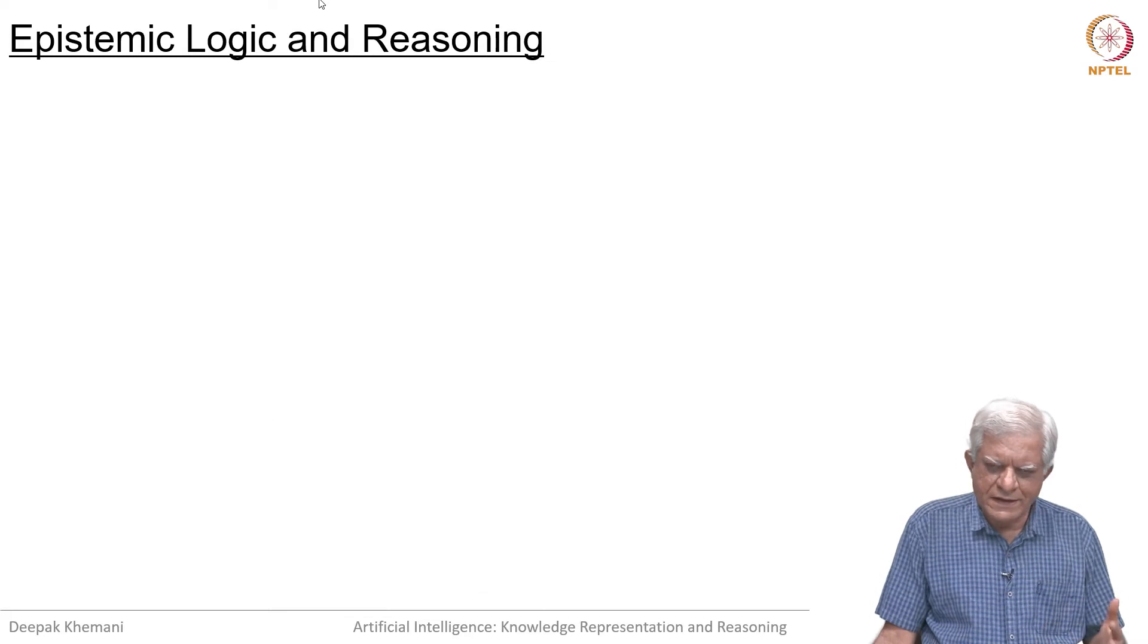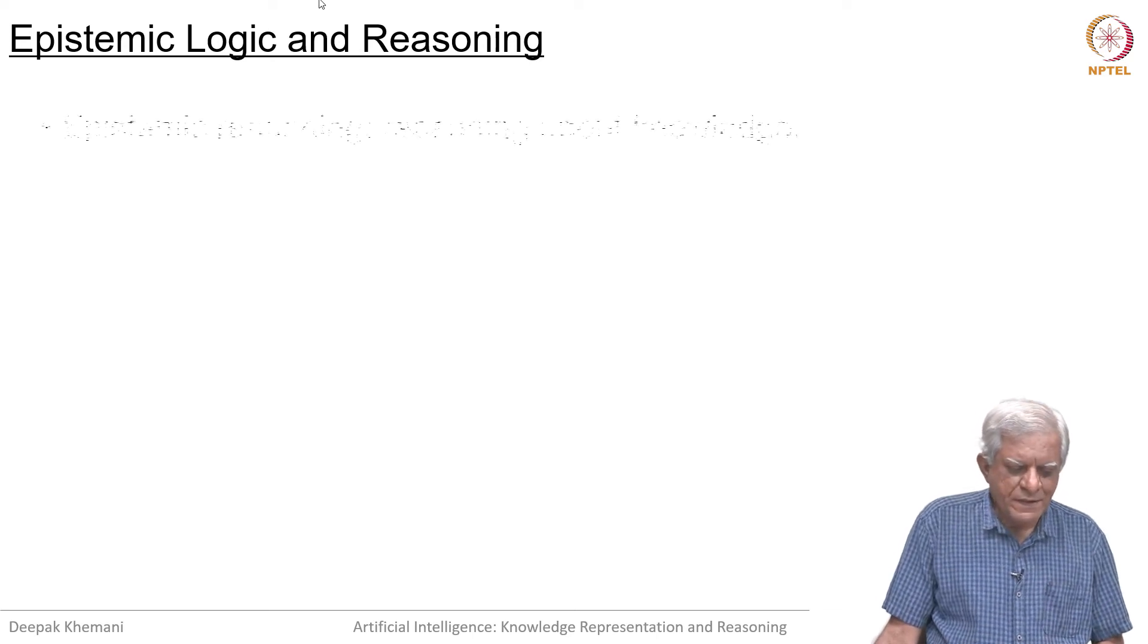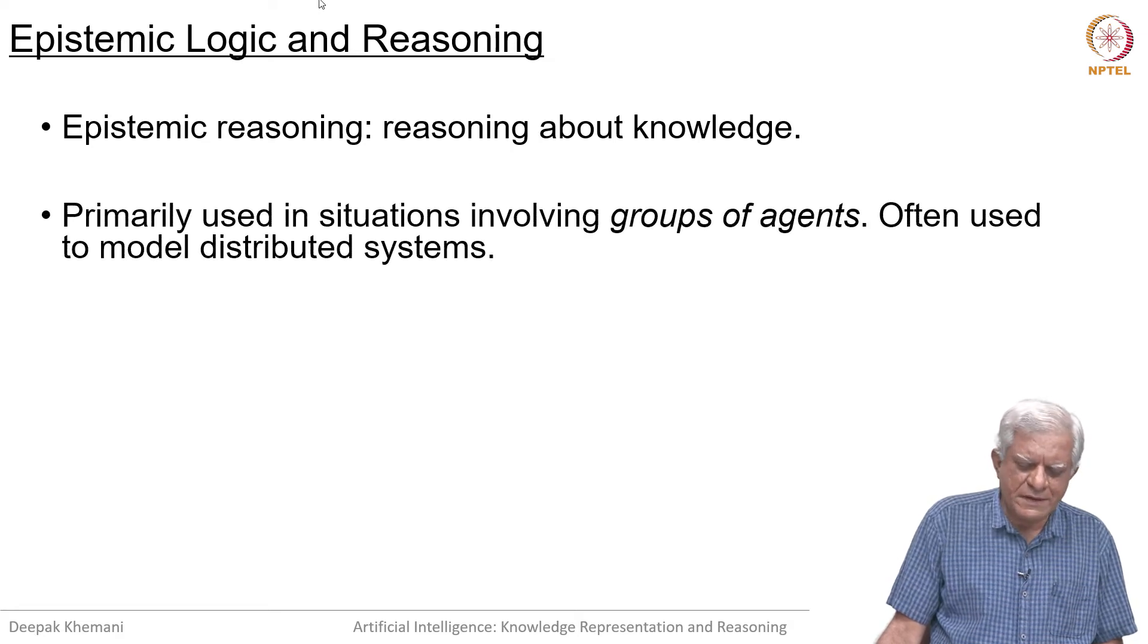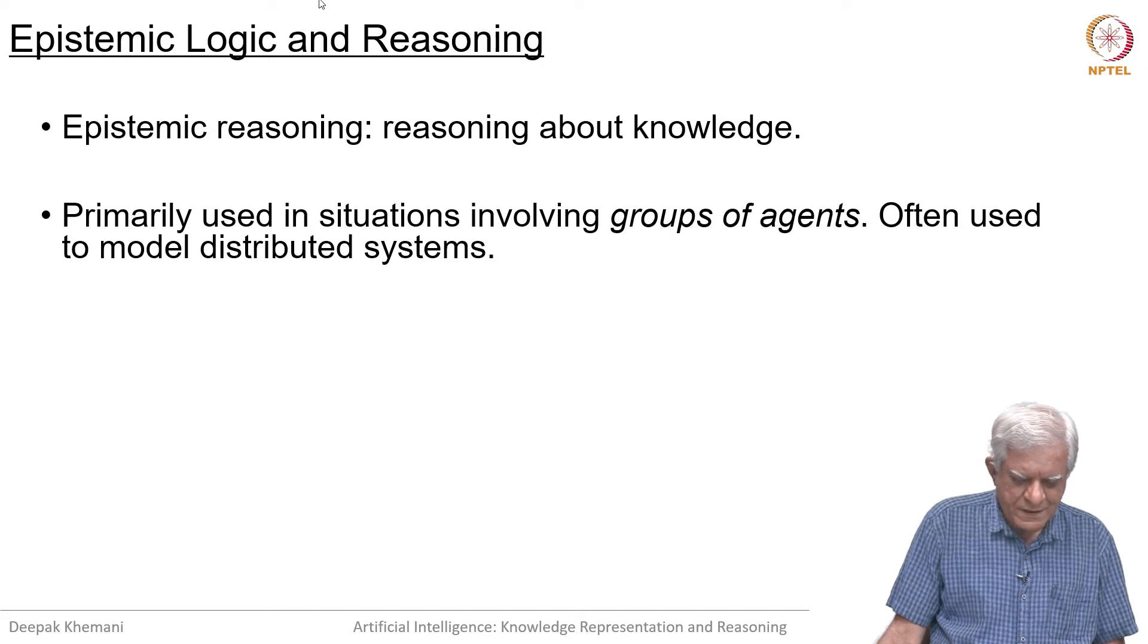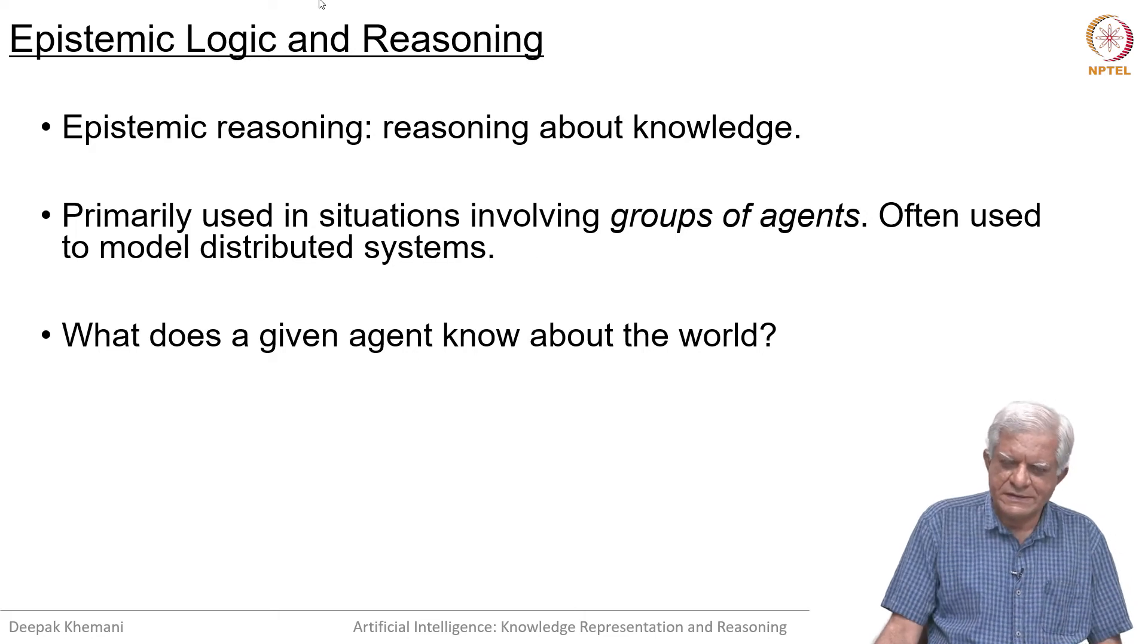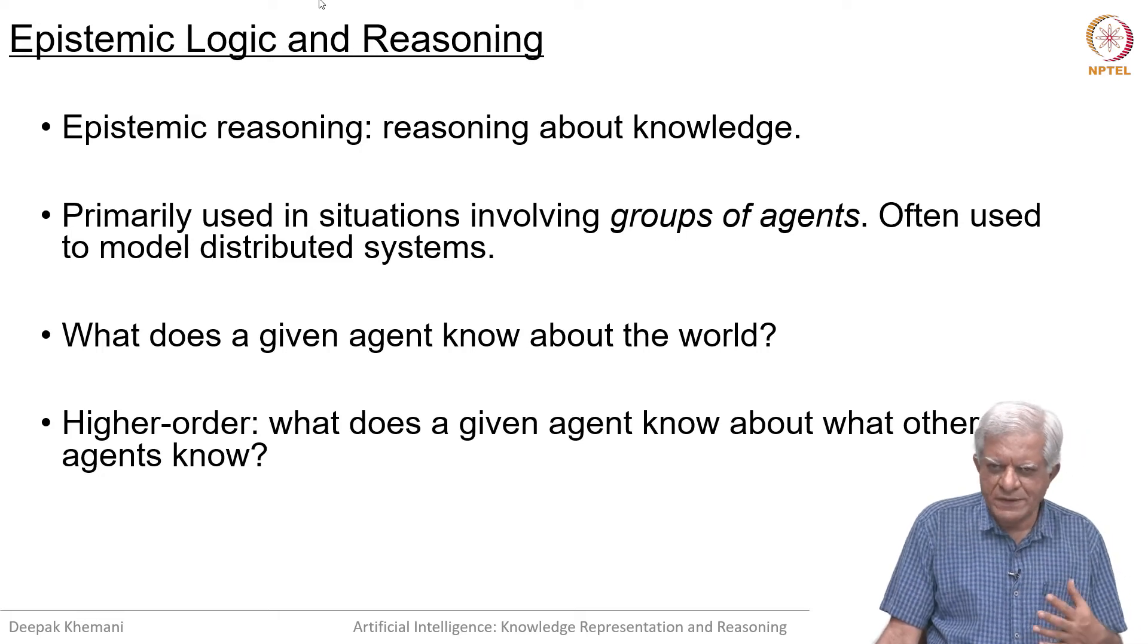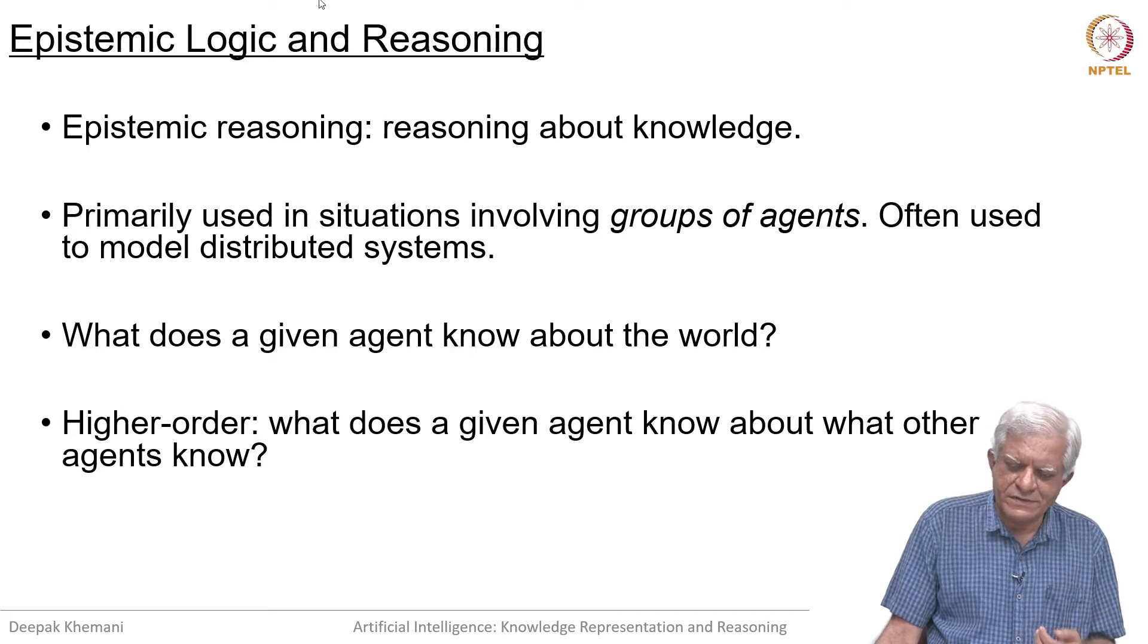We have seen a couple of puzzles and let us now look into this mechanism of epistemic logic and reasoning. It is reasoning about knowledge, it is reasoning about what other people know or other agents know and making inferences from there. It is primarily used in situations involving groups of agents, often used to model distributed systems. What does a given agent know about the world and more importantly the higher order knowledge as to what does the given agent know about what other agents know. So a knows that b knows that b's number was greater than or equal to 2 and this kind of sentences we want to be able to reason with.